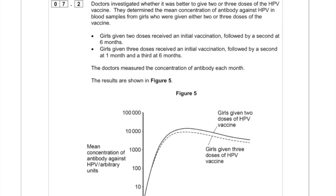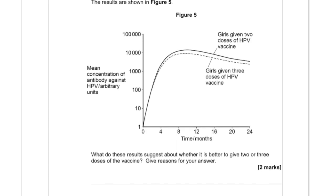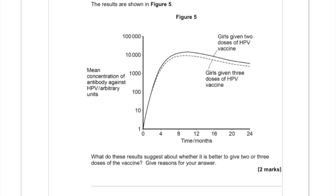The next part: doctors investigated whether it was better to give two or three doses of this vaccine. They determined the mean concentration of antibody against HPV in the blood from girls given two or three doses. The girls given two doses received an initial vaccination and another at six months. Those receiving three doses had the same, plus a second vaccination at one month. Doctors measured the concentration of antibody each month.